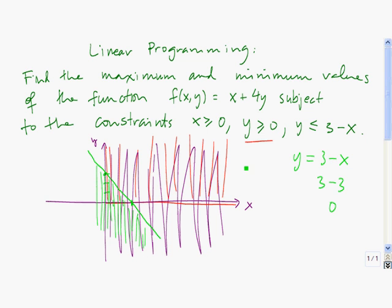Now what we look for is the overlapping region — the region that satisfies all of these. So we're looking for the region that has all three colors in it, and that is precisely this region right here. So that is the region that we care about.